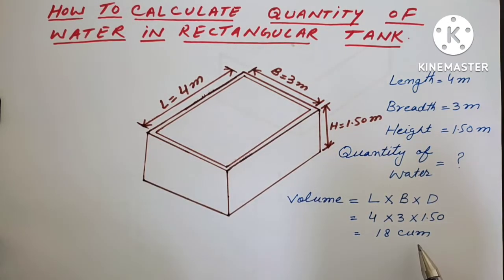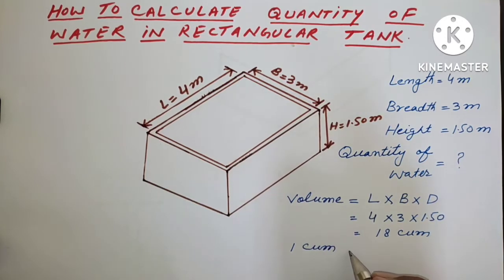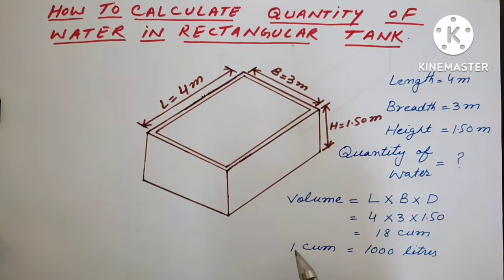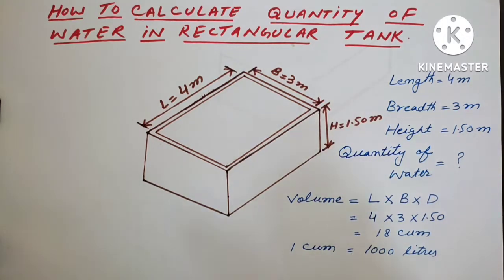After calculation we will get 18 cubic meters. So the volume of this water tank is 18 cubic meters. Now, 1 cubic meter is equal to 1,000 liters — this is the capacity of 1 cubic meter.